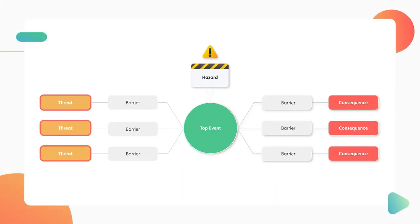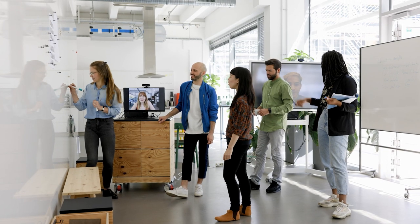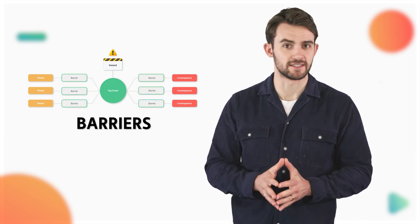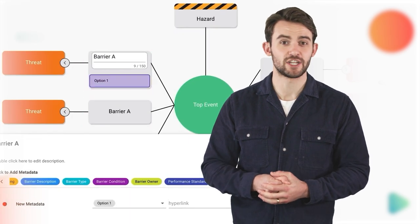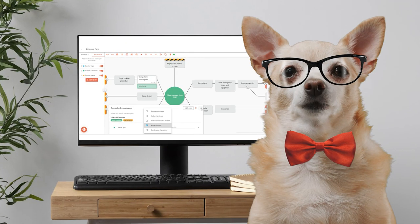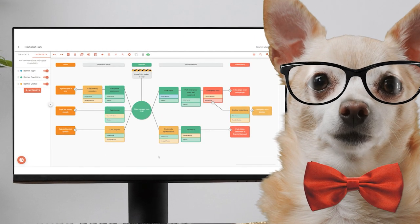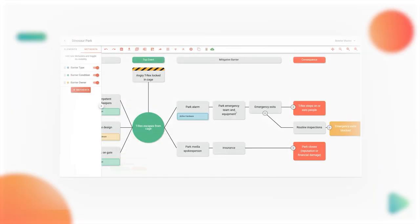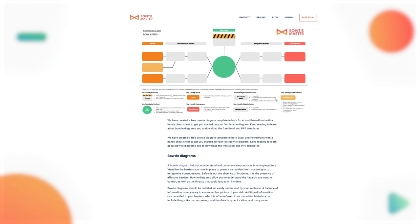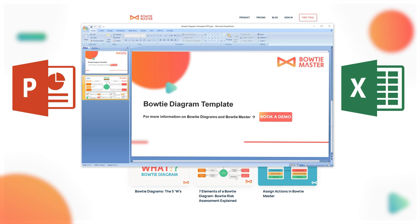Identify the causes or threats that could lead to the top event. You can brainstorm this as a group and begin to add these in. Next, establish preventative and mitigative controls, or in simpler terms barriers, against these threats and consequences. If any of this is sounding like jargon to you, check out our video on the elements of a bowtie diagram, where we go into the difference between preventative and mitigative barriers. Once done, we can then visualize the risk scenario using the iconic bowtie shape, as shown on screen right now. You can also add relevant information to those barriers using metadata — a really handy feature within Bowtie Master. If you're looking for a helping hand, you can download our free template from the link in the description, which helps you build your bowtie diagram in PowerPoint or Excel. Though we'd always recommend using actual diagram software for this.